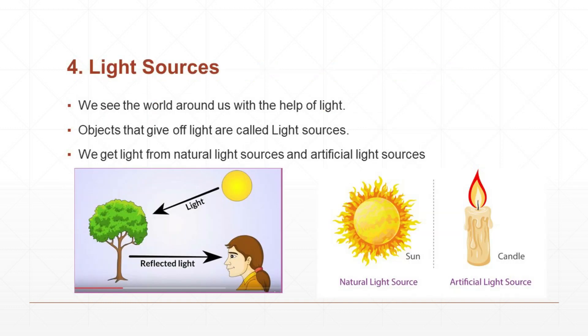Next, let us move on to light sources. We see the world around us with the help of light. Looking at the picture: light from the sun falls on a tree, is reflected from the tree, and the reflected light reaches our eyes, so we can see the tree. Objects that give off light are called light sources. We get light from natural light sources or from artificial light sources.